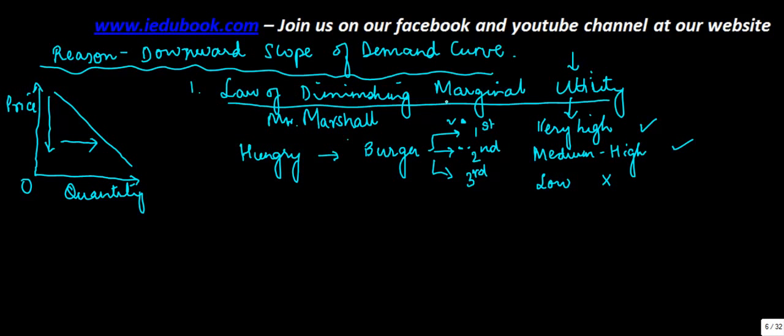So what the law of diminishing marginal utility says is that as consumer gets more and more of a particular good, the utility for the consumer for that goes down.